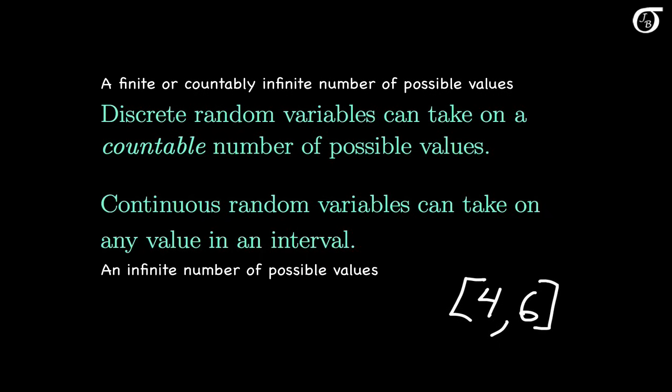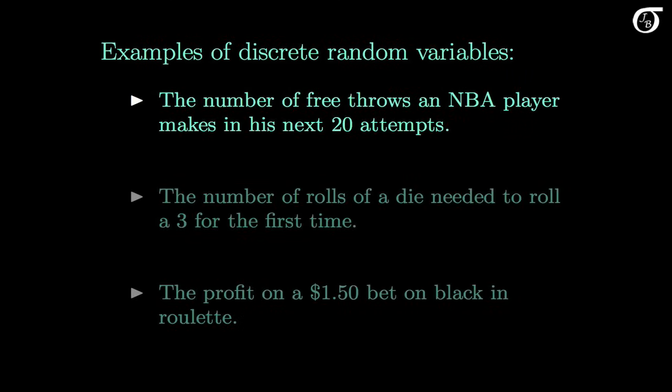The distinction between discrete and continuous random variables becomes clearer when we look at a few examples. Here are a few examples of discrete random variables. The number of free throws an NBA player makes in his next 20 attempts — the player can make 0, 1, 2, up through 20, giving 21 possible values. That is certainly a countable number of values, so the number of free throws made is a discrete random variable.